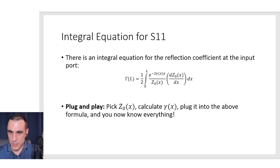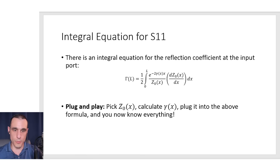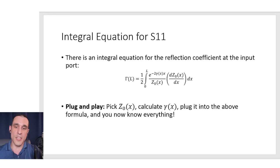You don't have to know all the calculus or work through all the integrals if you have a calculator like the one I'm going to show. Typically people will just use a field solver — you can do it in Simbeor, HFSS, OpenEMS, or other programs. Essentially, as long as you know this impedance profile, you can calculate everything that goes into this integral and then plug and chug until you get an answer. You start by picking your impedance profile, then calculate the propagation constant — which can also vary along x. Then you calculate the derivative of the impedance profile and use all of that to calculate your reflection coefficient.